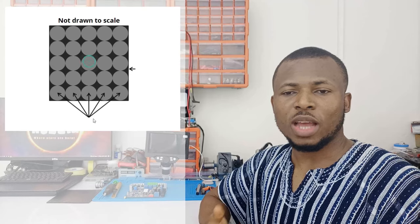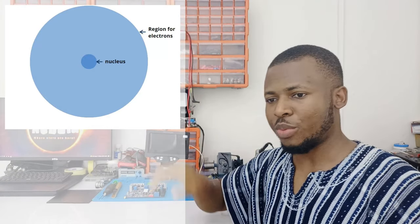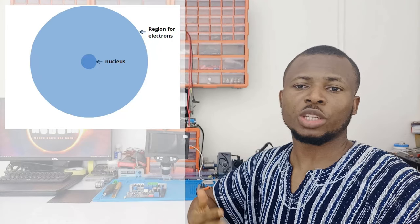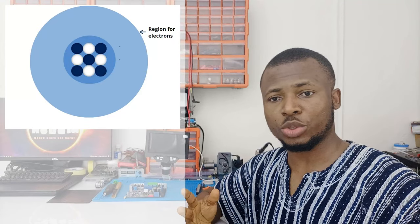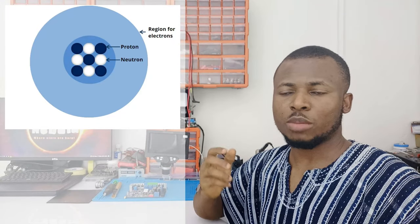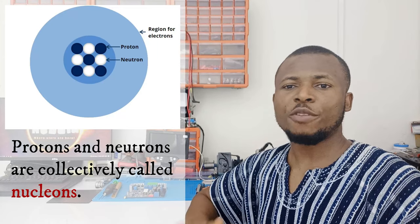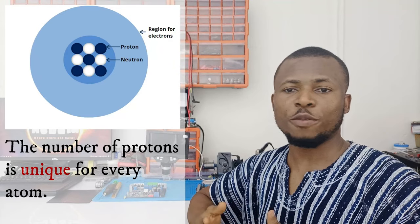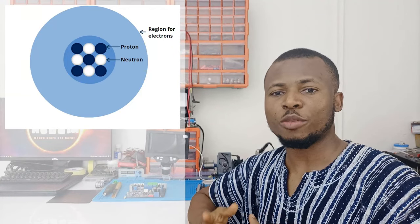When we zoom into an atom, we see two regions: the central region and an area around the central region. The central region is what we call the nucleus. The nucleus contains two different types of particles — the protons and the neutrons. The protons and neutrons are collectively called nucleons. Every atom contains a unique number of protons. In fact, it is the number of protons that actually identifies the type of atom.